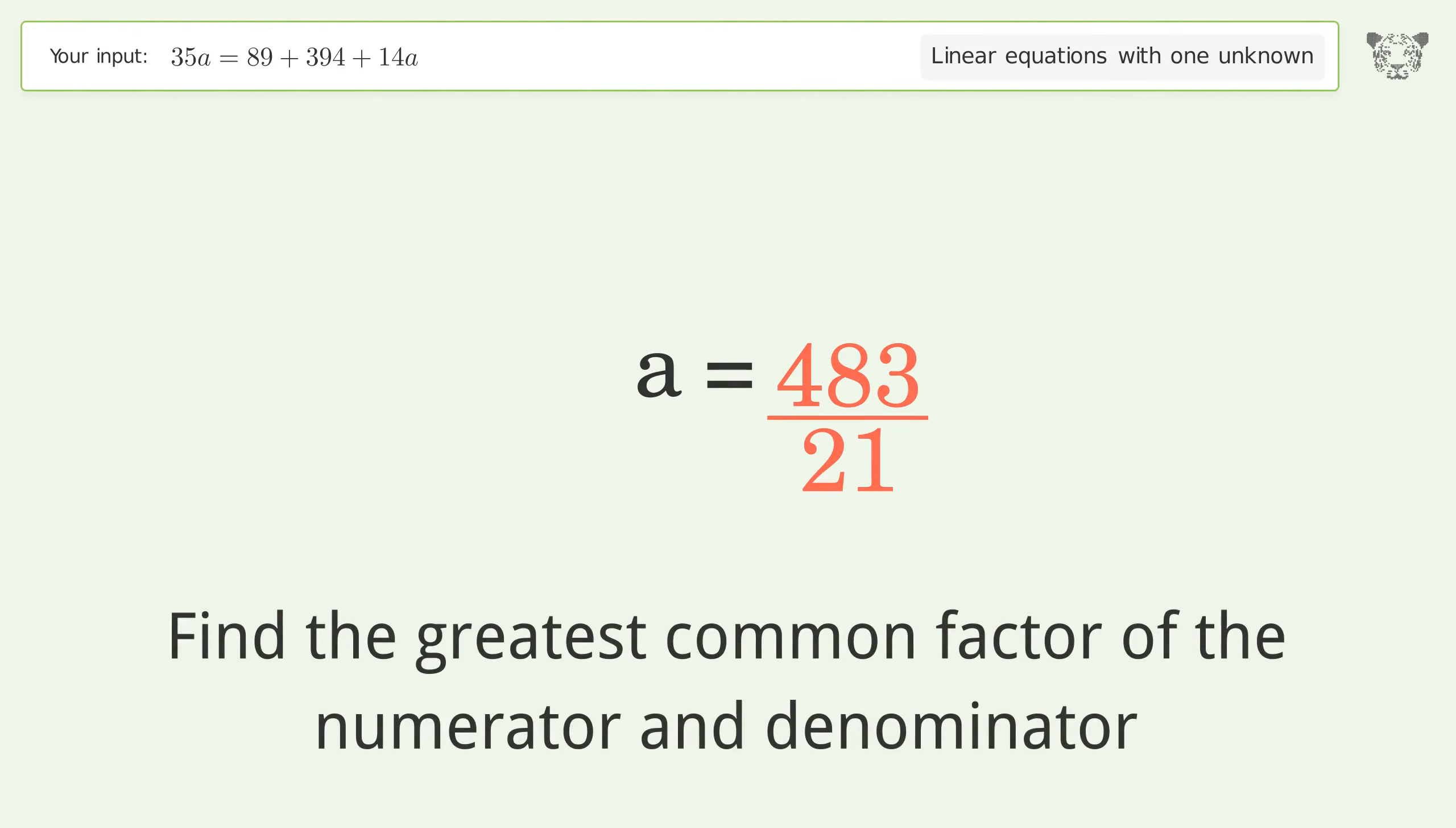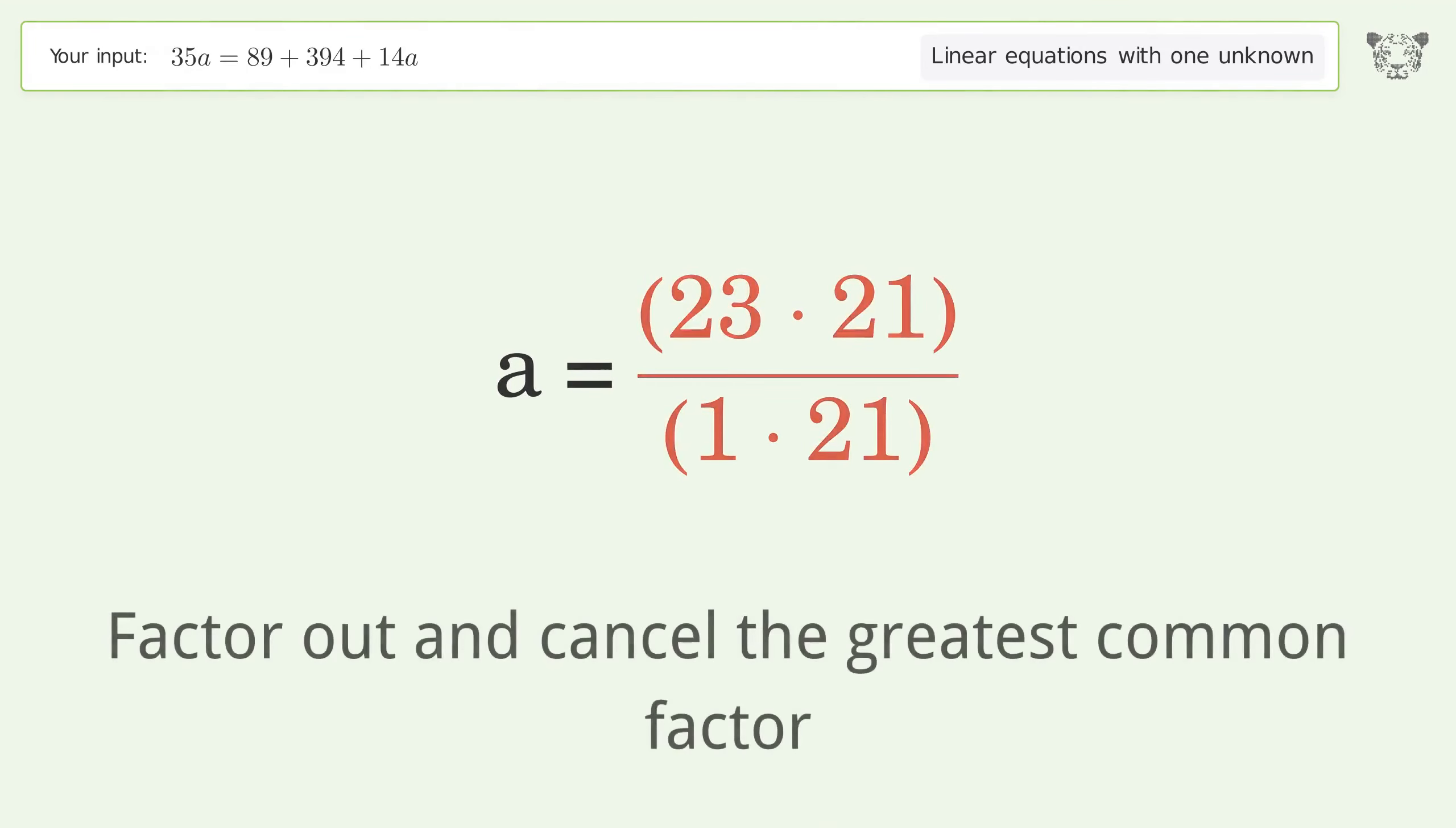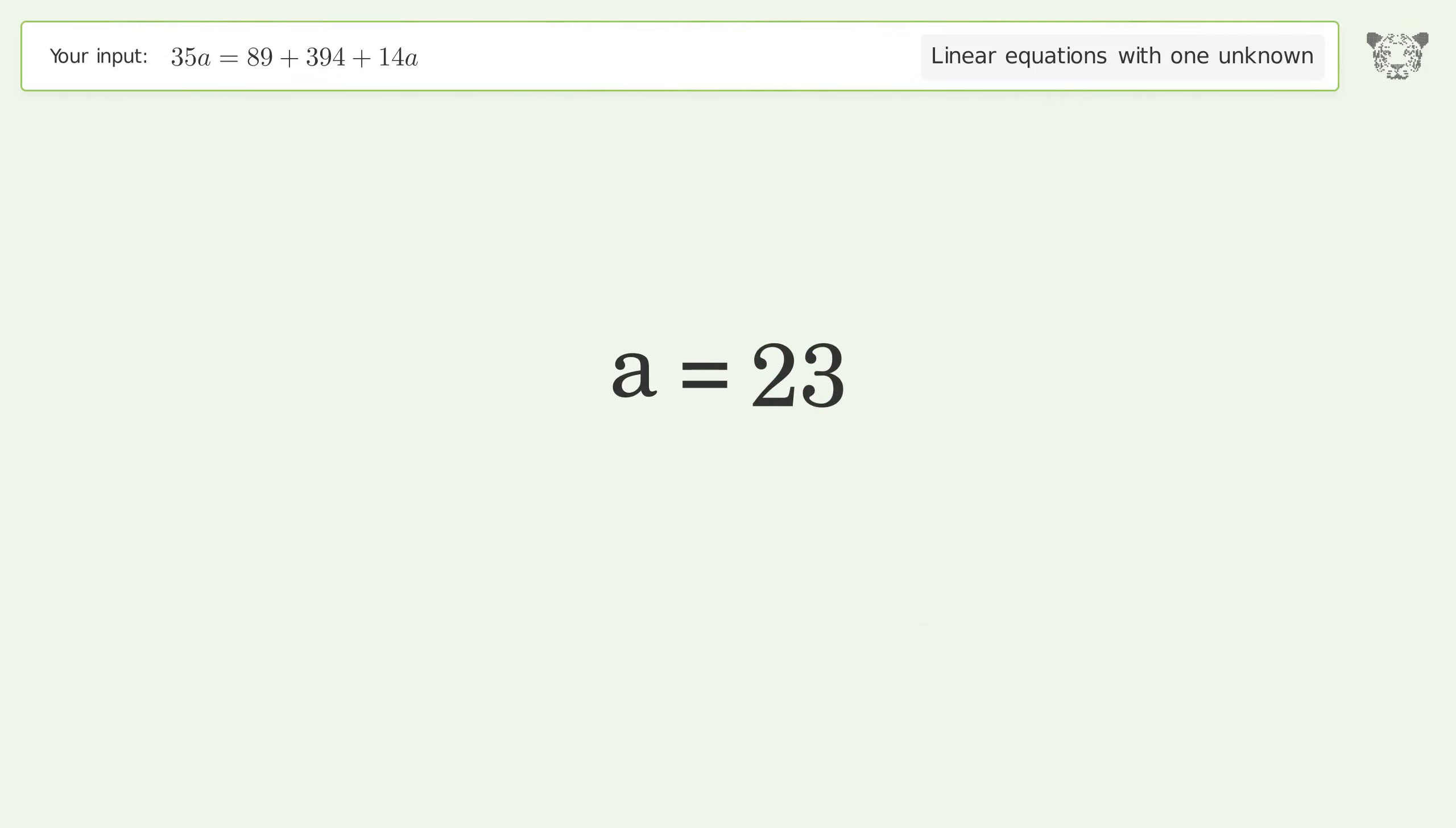Find the greatest common factor of the numerator and denominator. Factor out and cancel the greatest common factor. And so the final result is A equals 23.